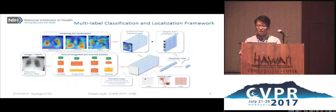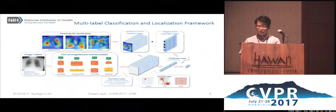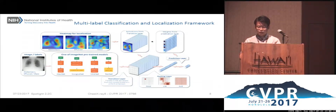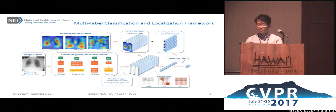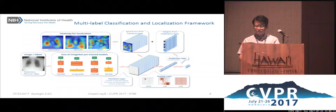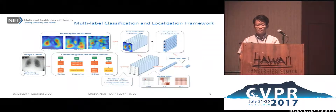For this purpose, we propose a weakly supervised multi-label classification and localization framework, where only NLP-mined image labels are used for training. As a side product, we can generate a saliency map for each detected disease pattern by using trained model parameters from the final fully-connected layers, which indicates the contribution of each activation map to the final classification performance.